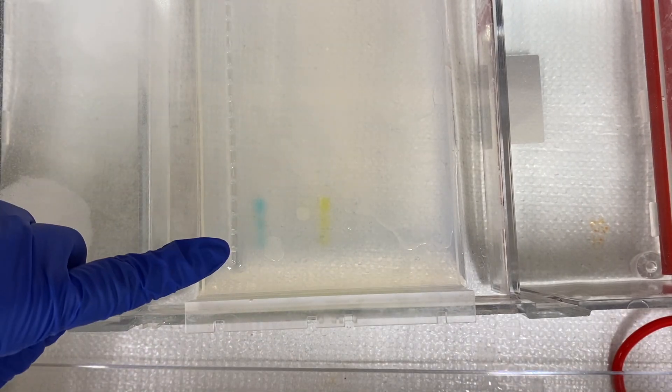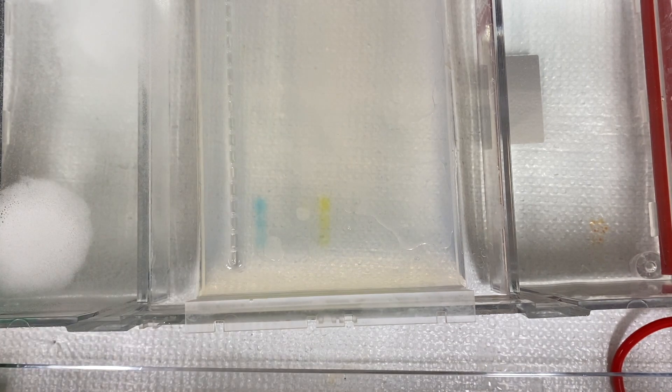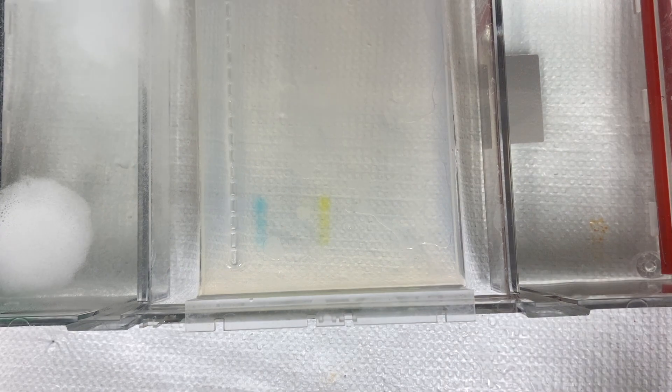Once this process was complete, I saw these really nice bands in the gel. There are actually two bands because certain dyes give rise to two components with different electrophoretic mobilities. They don't actually interfere with our ability to read the data though, so it's not really something to worry about.